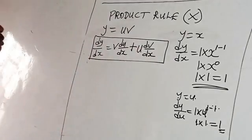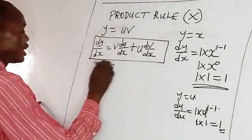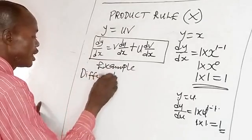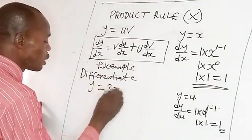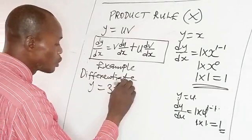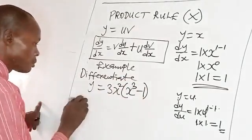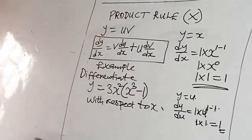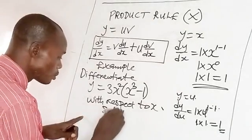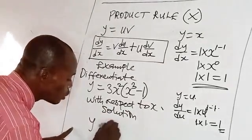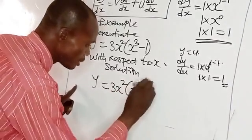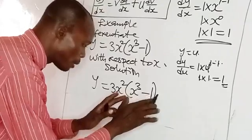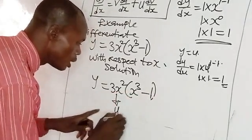Now let's take an example. Differentiate y equals 3x squared times (x to the power 3 minus 1) with respect to x. This is the product of two functions — 3x squared multiplied by the expression in brackets — so we can take one part as u and the other as v.